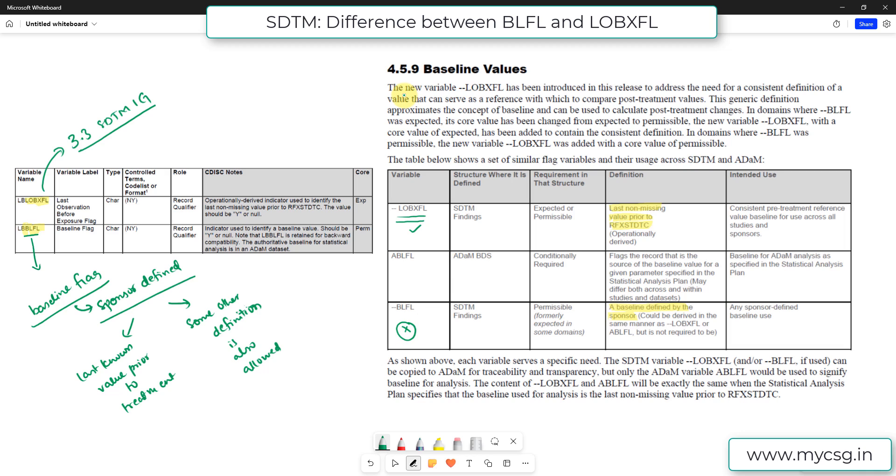So if we go through the detail in this section, it says the new variable LOBXFL has been introduced in this release, which is 3.3 IG, to address the need for a consistent definition of a value that can serve as a reference with which to compare the post-treatment values. So we know that the treatment start at SDTM level is populated in the variable RFXSTDTC in your DM. So we want to compare all the post-treatment values with the latest value before the RFXSTDTC. So for the purpose of having a consistent definition across studies, this new variable is being added.